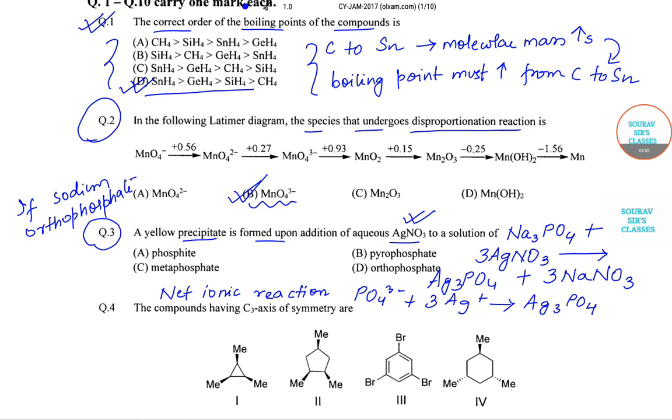...aqueous solution of silver nitrate, then obtained yellow precipitate is silver orthophosphate. So this part is nothing but our silver orthophosphate.